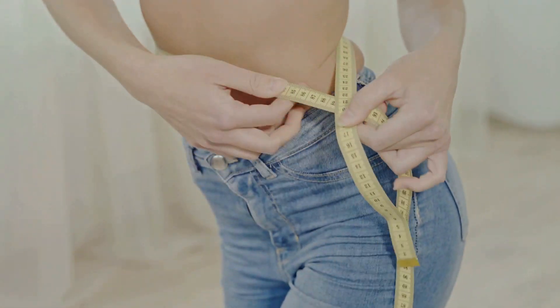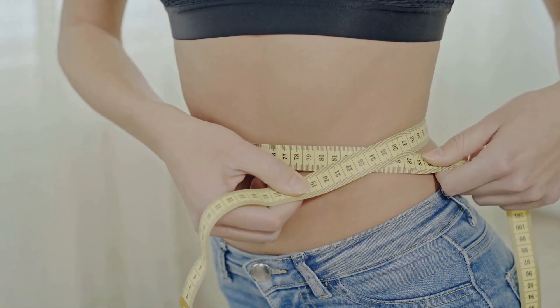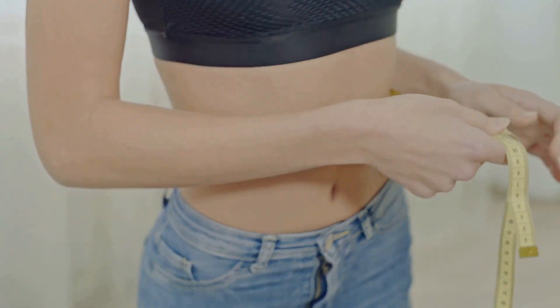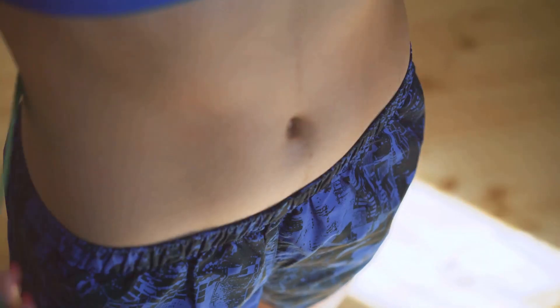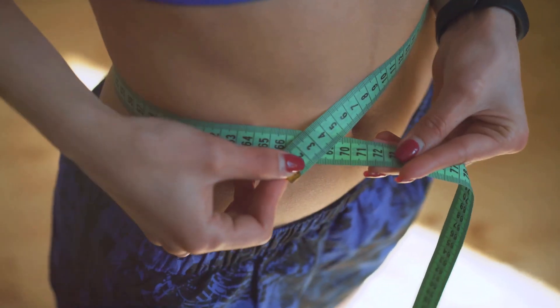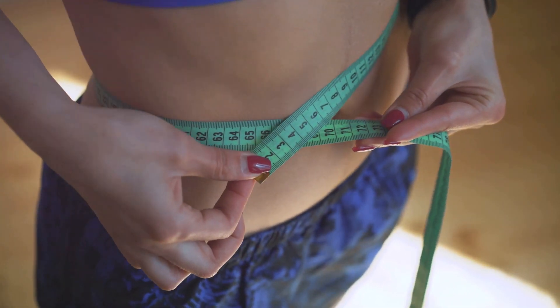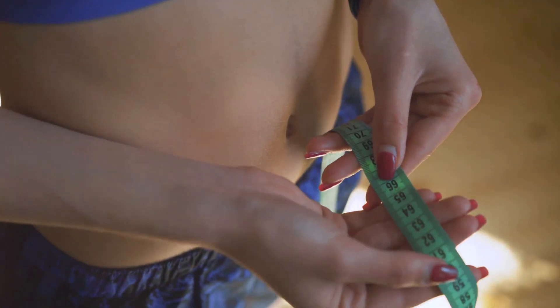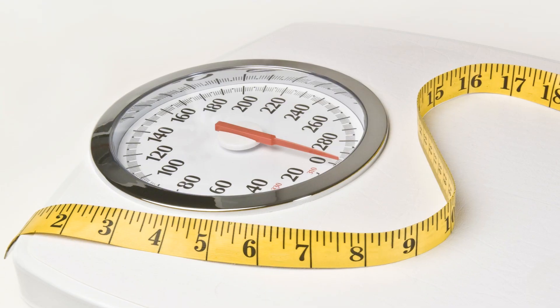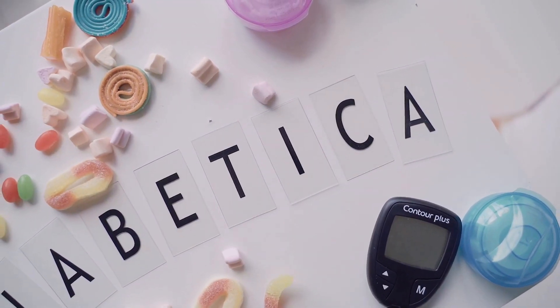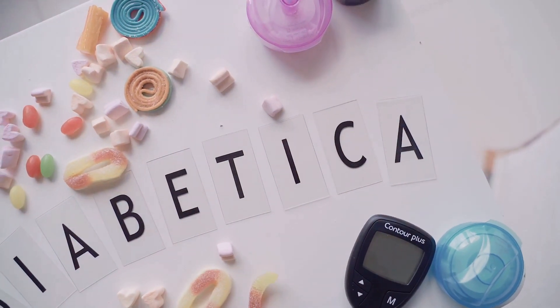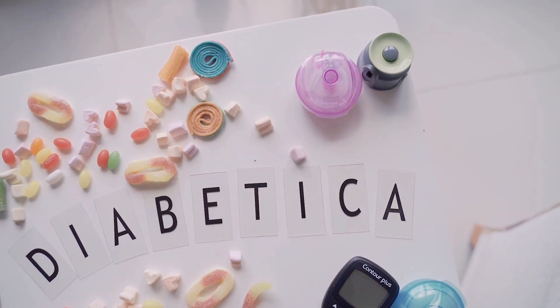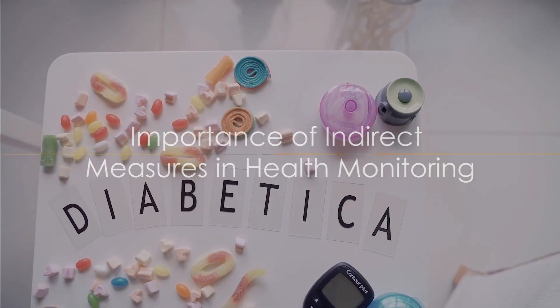In essence, waist circumference and the triglyceride to HDL ratio are two accessible measures that can provide insights into your insulin sensitivity. While they may not directly measure insulin sensitivity, they are closely linked and can help you monitor your progress. They also have the advantage of being easy to obtain, as they don't require specialized tests or equipment. So, remember, don't overlook these seemingly simple metrics. They can provide a wealth of information and are a great way to keep track of your metabolic health.